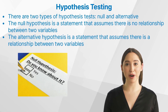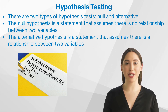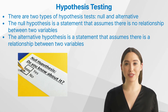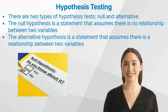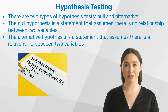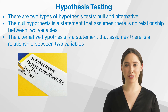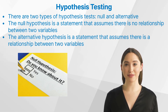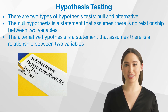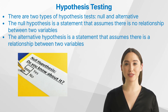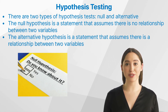There are two types of hypothesis tests: null and alternative. The null hypothesis is a statement that assumes there is no relationship between two variables or that an intervention has no effect on an outcome. The alternative hypothesis is a statement that assumes there is a relationship between two variables or that an intervention has an effect on an outcome. Hypothesis tests can also be classified as one-tailed or two-tailed tests. A one-tailed test is used when a directional prediction is made, while a two-tailed test is used when a non-directional prediction is made.